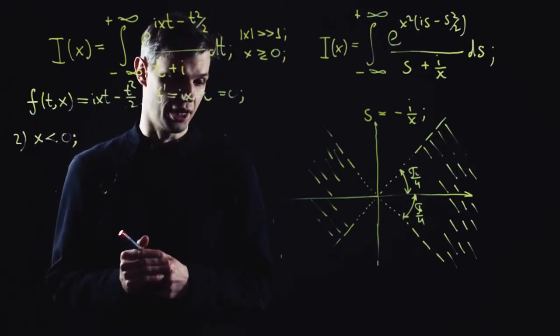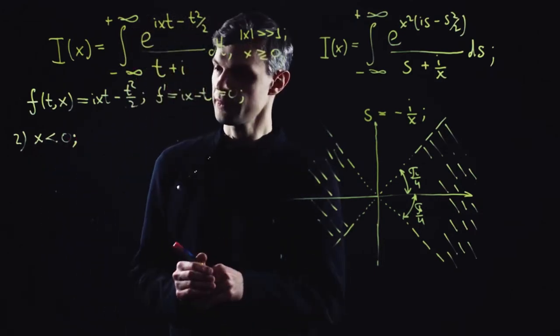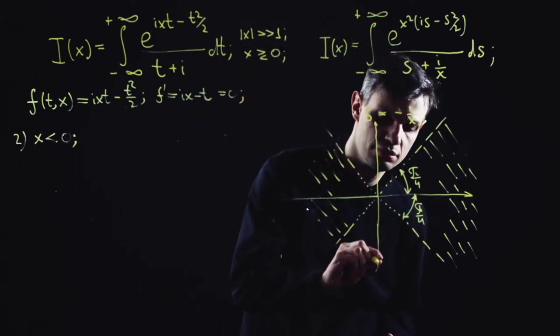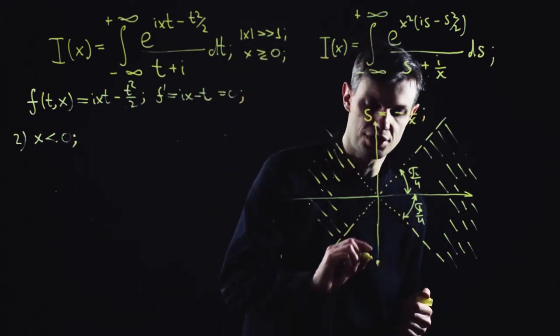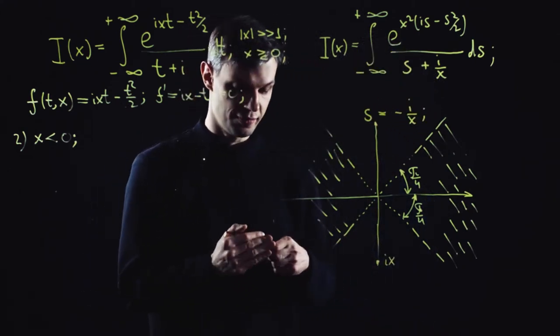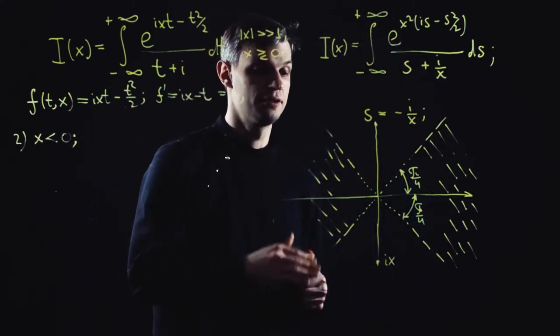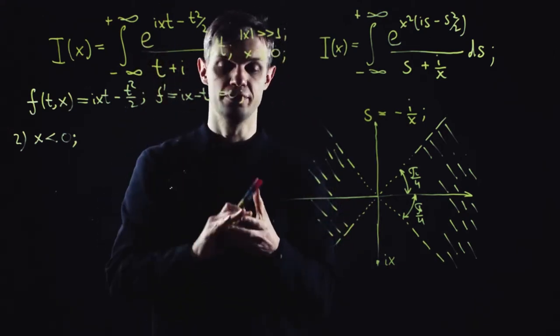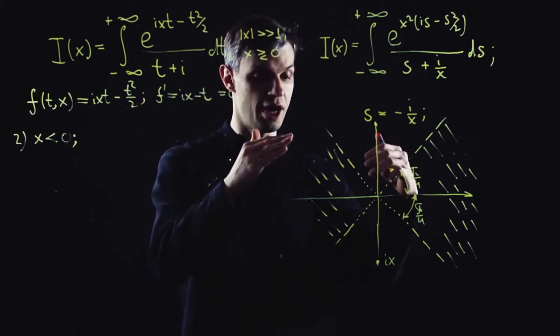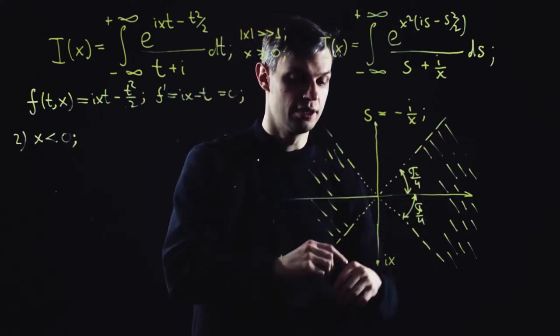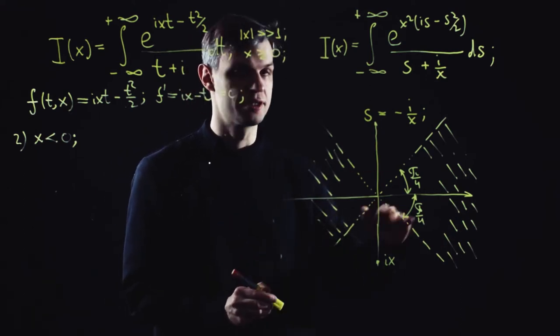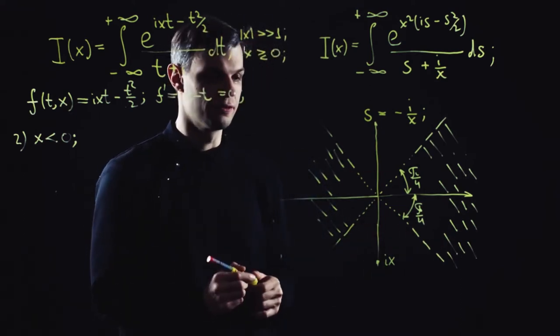The case of negative and large x. Now our saddle is positioned below the integration contour, and the relief of the real part of the exponent function is inclined in the opposite direction. We have to move the contour down to pass it through the lowest regions along the relief of the exponent function.